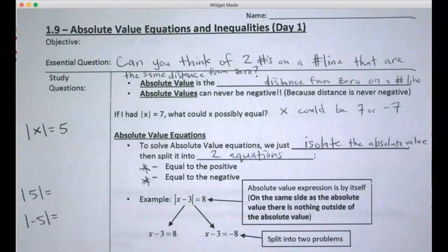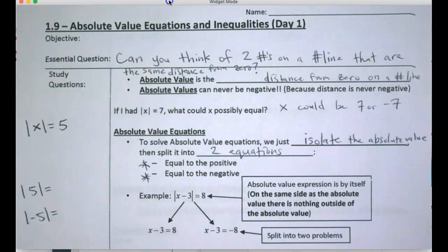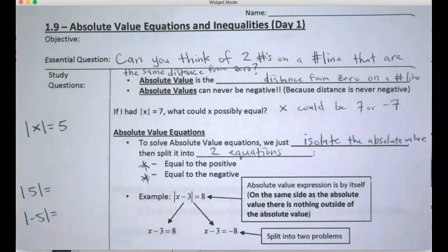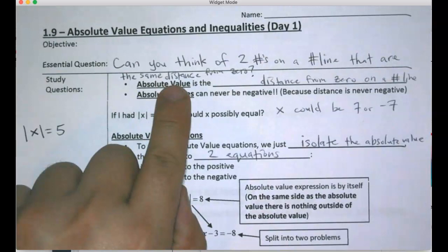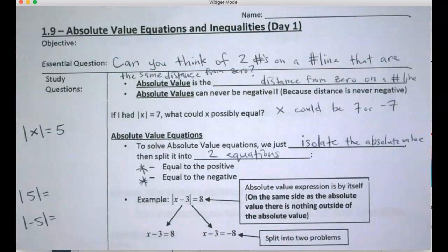These are notes on the topic of absolute value equations. A couple of pointers before getting into any actual equations. The question here says: can you think of two numbers on a number line that are the same distance from zero? That's fairly simple — numbers like 1 and negative 1, 2 and negative 2, 5 and negative 5. They're the same distance from zero. That's kind of what absolute value means.